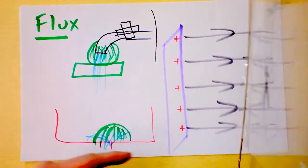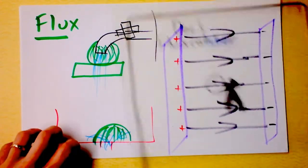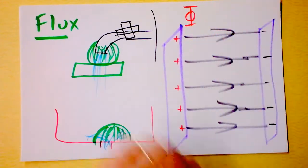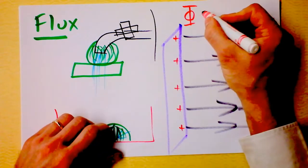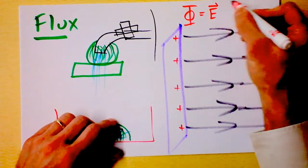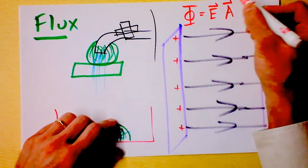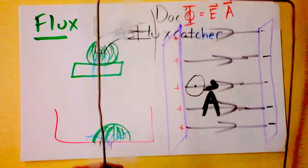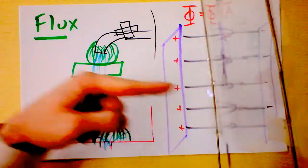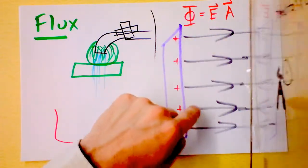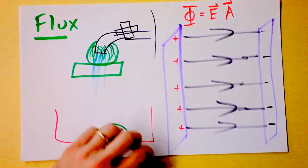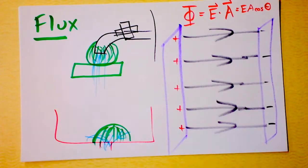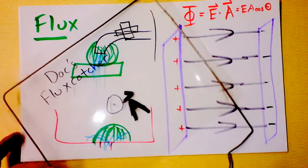Flux is represented by the capital Greek letter phi, and it is electric field times area. We need a dot product, not a cross product, because we want a cosine — we want the area vector, pointing to the right, to be parallel to the electric field, also pointing to the right. So flux equals E dot A, which is electric field times area times cosine of the angle between electric field and area.